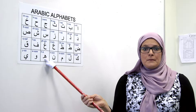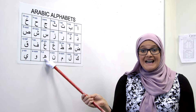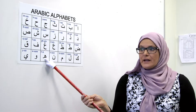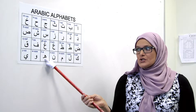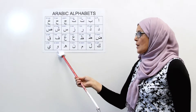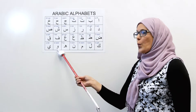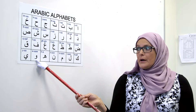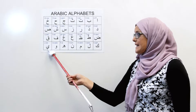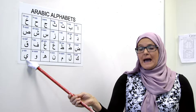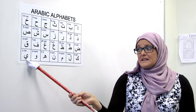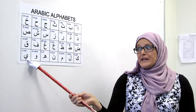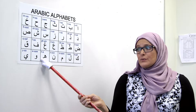Next one is Ha — like 'home,' 'hello,' 'hi.' It's a soft H, it's a regular H. Next one is Waw. The sound is W — 'what, what.' And the last one is Ya. The sound is 'yah, yah' or like 'yellow.'